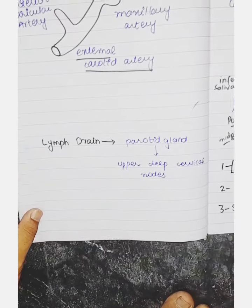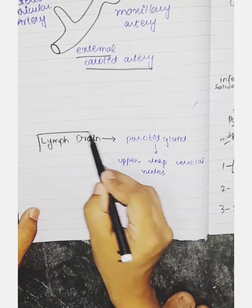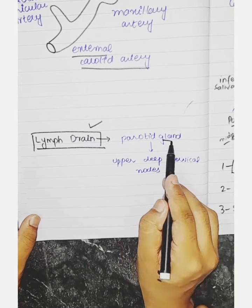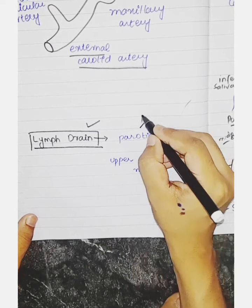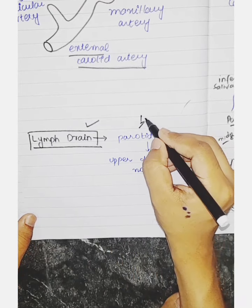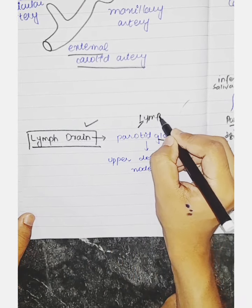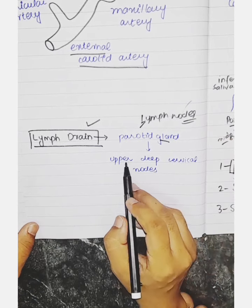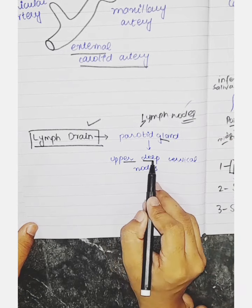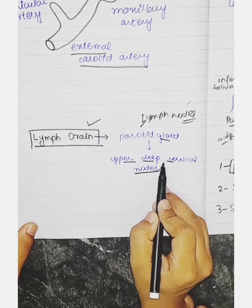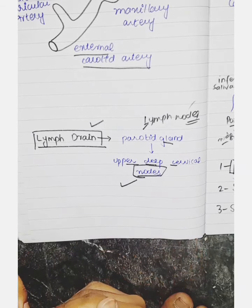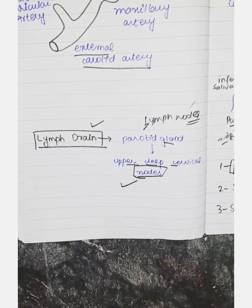The last topic is lymph drainage of the parotid gland. The lymph drains first into the parotid lymph nodes, and then into the deep cervical nodes, with final drainage mostly into the internal jugular vein.